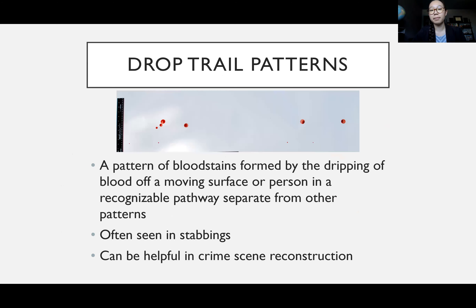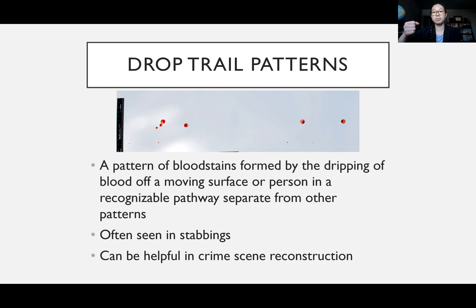The last type of passive pattern is a drop trail — a pattern of bloodstains formed by the dripping of blood off of a moving surface or person in a recognizable pathway separate from other patterns. This is often seen in stabbings: if a perpetrator walks away holding a bloody knife, blood drops drip off due to gravity as they walk, which is distinct from cast off or impact stains. This can be very helpful in crime scene reconstruction, showing movement, potentially leading to a discarded weapon, or if the suspect was bleeding, providing DNA evidence.